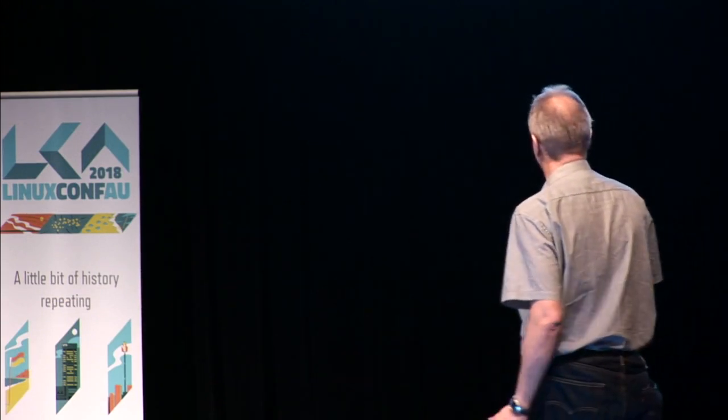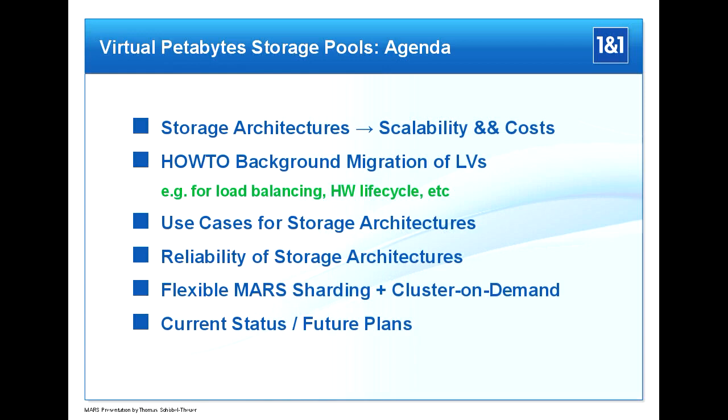First I'm talking about storage architecture and how it influences costs — by choosing the architecture you get different costs and different reliability. Next is a sysadmin step-by-step instruction on how to do background migration via MARS from logical volumes from one host to another. Then I'll focus on some use cases, because many people have been misguided by claims about what is best. I'll also touch on reliability.